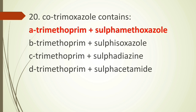Twentieth question: cotrimoxazole contains — option A trimethoprim plus sulfamethoxazole, option B trimethoprim plus sulfisoxazole, option C trimethoprim plus sulfadiazine, option D trimethoprim plus sulfacetamol. Cotrimoxazole contains trimethoprim plus sulfamethoxazole in a ratio of 1:5. The correct answer is option A.